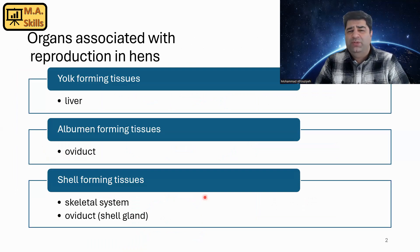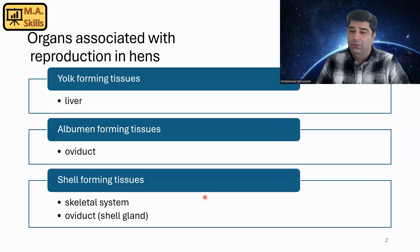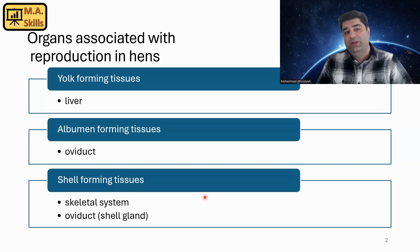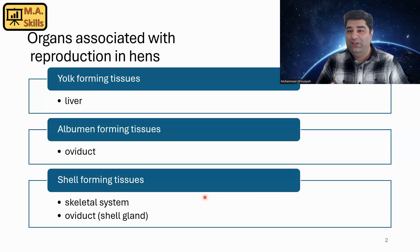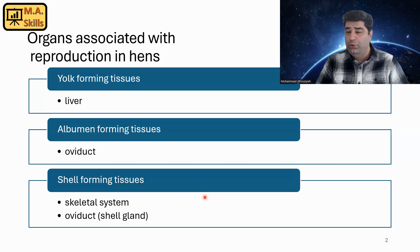I'm going to briefly talk about some organs associated with reproduction in hens. It's not only hypothalamus, pituitary, and ovary — we have other tissues collaborating with reproduction. One of them is the liver, which produces yolk components.